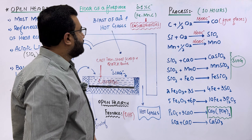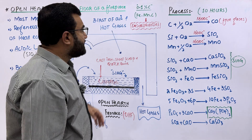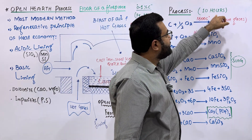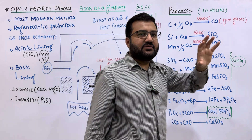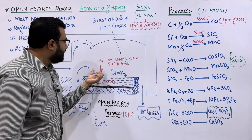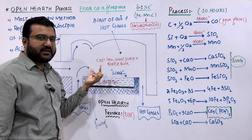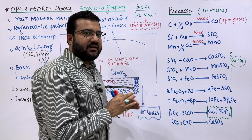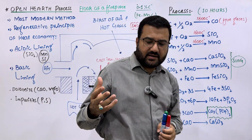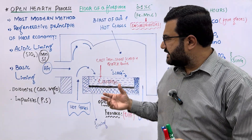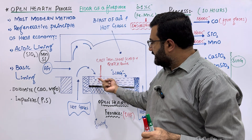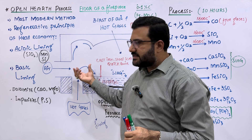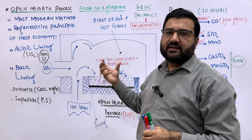The open hearth process takes almost 10 hours. First, the open hearth furnace is inspected for any damage. Once the inspection is done, the light charge — such as scrap or shredded vehicles — is placed in the hearth of the furnace, and hot burning gases are introduced to melt that light charge.